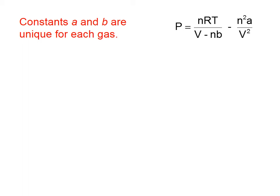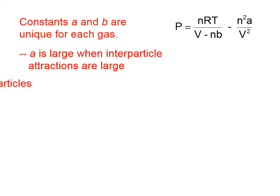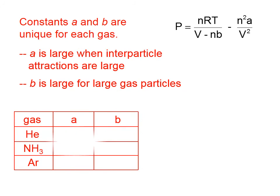The constants a and b are unique for every gas. Now, it's not difficult to remember what a is related to, nor what b is related to. a is related to attractions, particle attractions. So a is attractions. b is related to the volume, how much space the particle occupies. Not necessarily how massive it is, but how much space it occupies. So b stands for bulk. Volume is bulk. So b is related to the bulk, the volume of the particle. a is large when interparticle attractions are large. And b is large for large gas particles. Not necessarily for massive gas particles, for large, space-wise, gas particles.